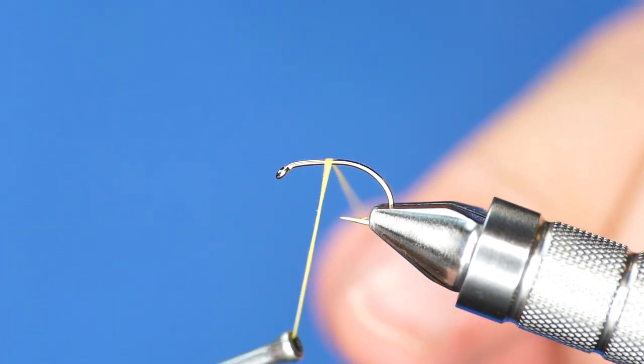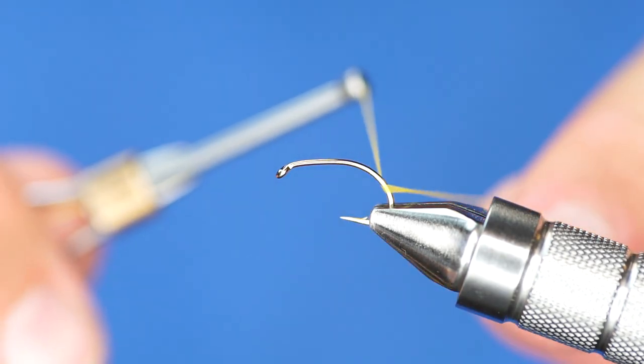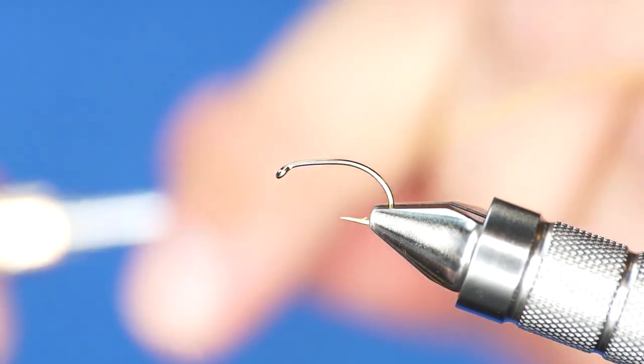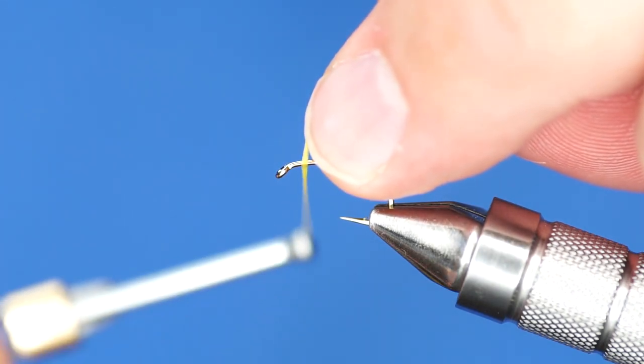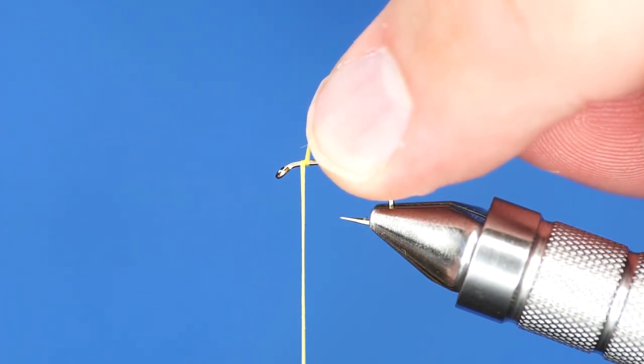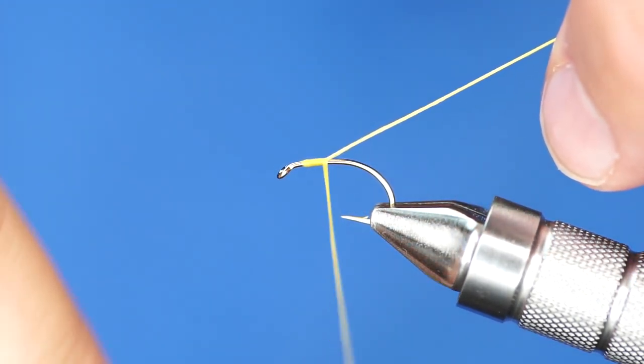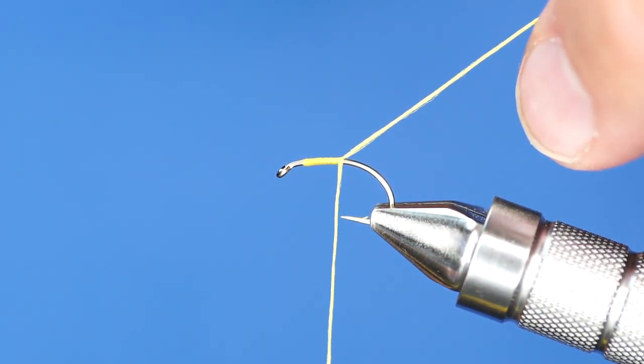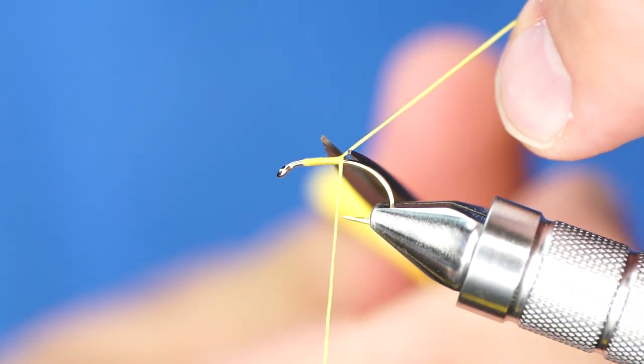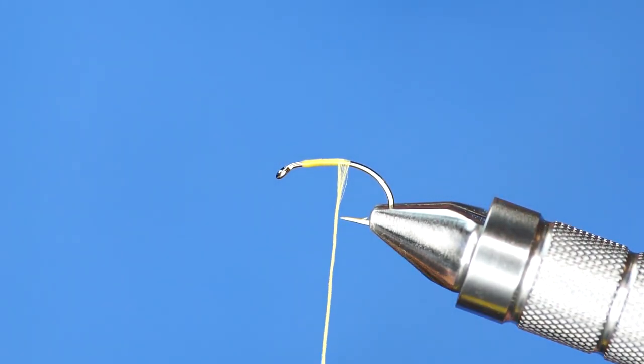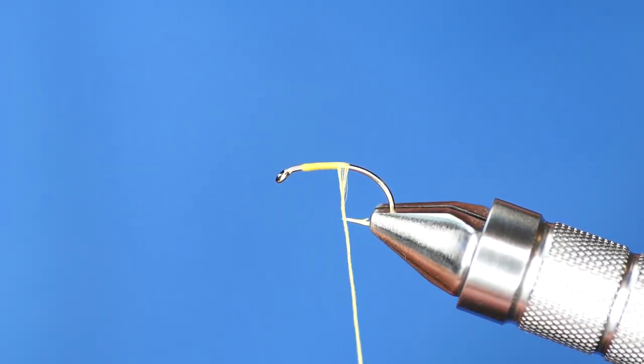This is a very flat thread. As you can see, if I rub it on the hook, it really flattens out. So what I'm going to do is start it a little bit back from the eye and start winding over the top of itself. And when I get about to here, I'm going to trim the excess off, and that will help with the taper of this fly.